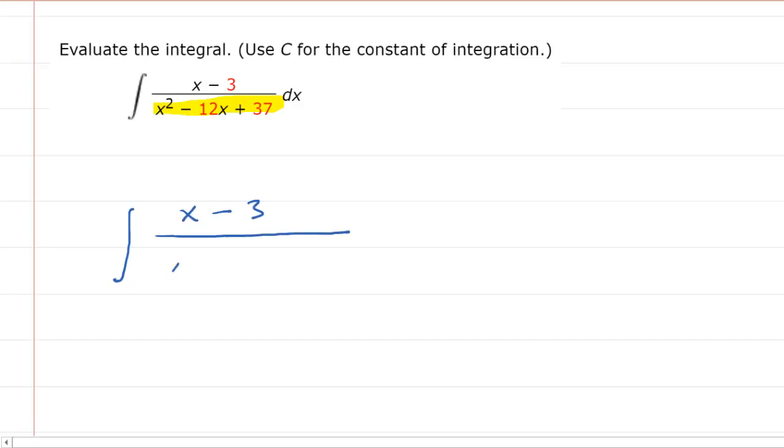So what you do is you write your polynomial x squared minus 12x. But before you include the constant of 37, you're going to take the coefficient of x, which in this case is negative 12. And what you'll do is take that coefficient, divide it by two, and then square it.